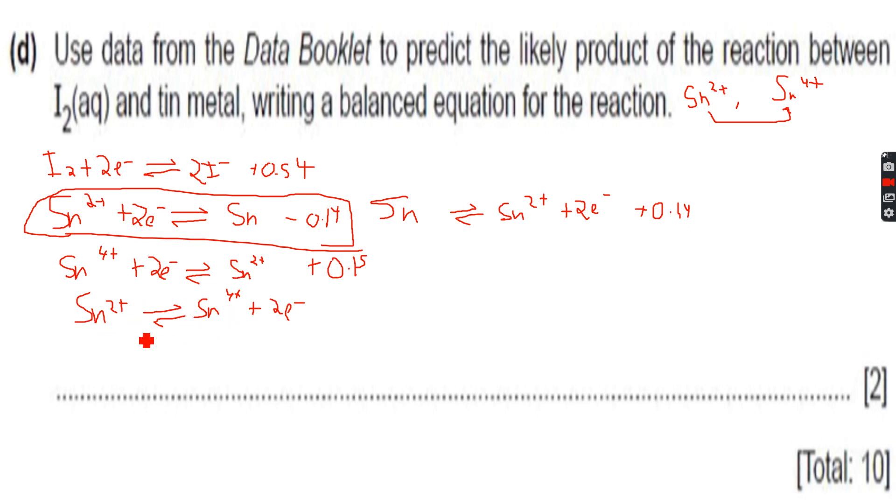So what we will do is we look at these two equations. The Sn2+ and Sn2+ cancel out because they are on two different reactions. Since we have inverted this, this becomes minus 0.15.